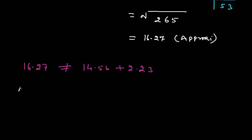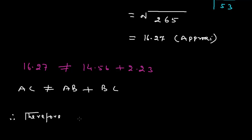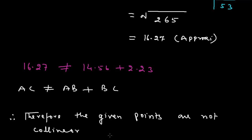This means the distance AC is not equal to the sum of distances AB and BC. Therefore, the given points are not collinear. This is the solution of the question. Thank you.